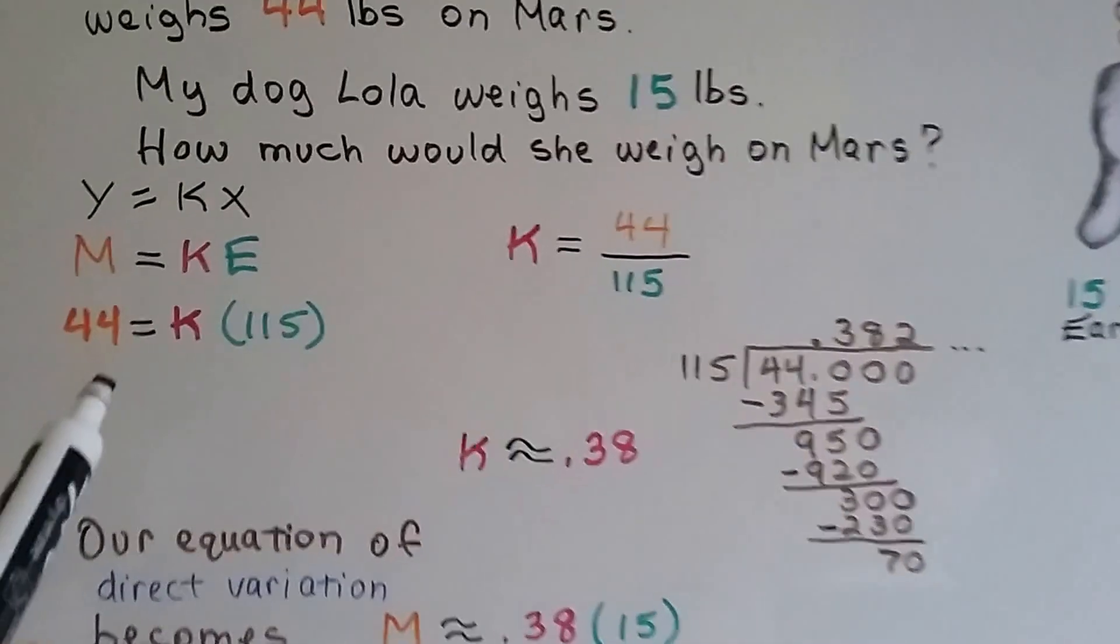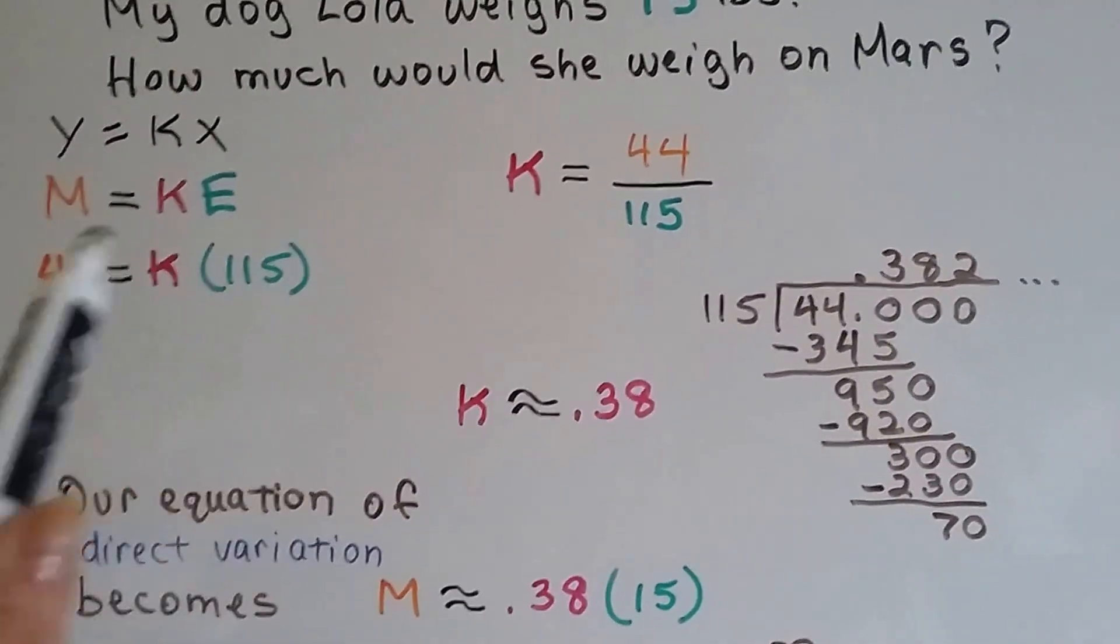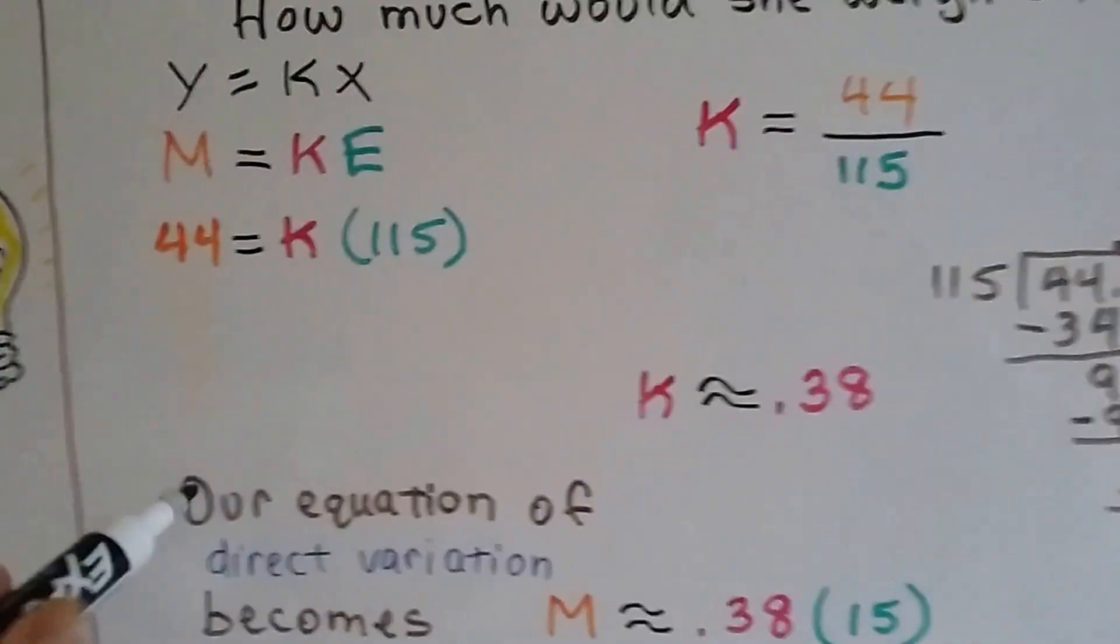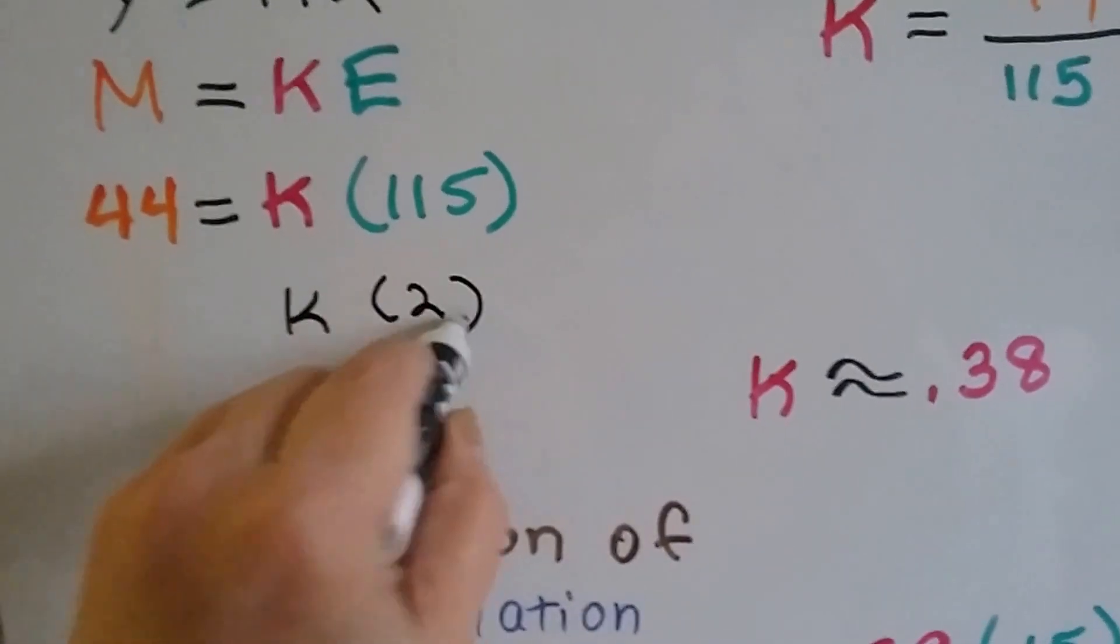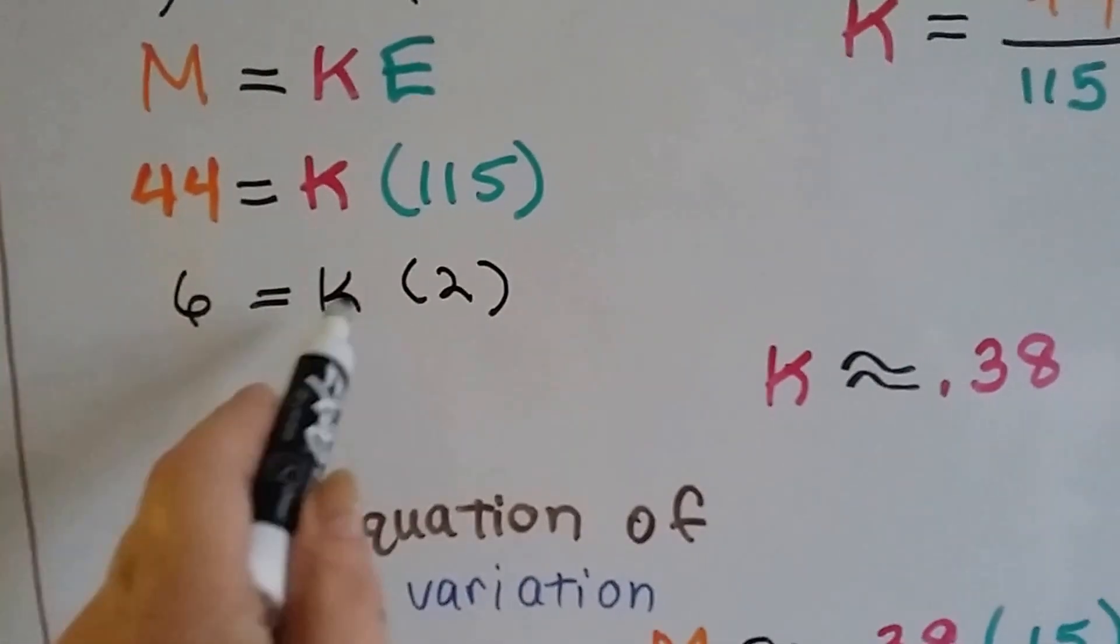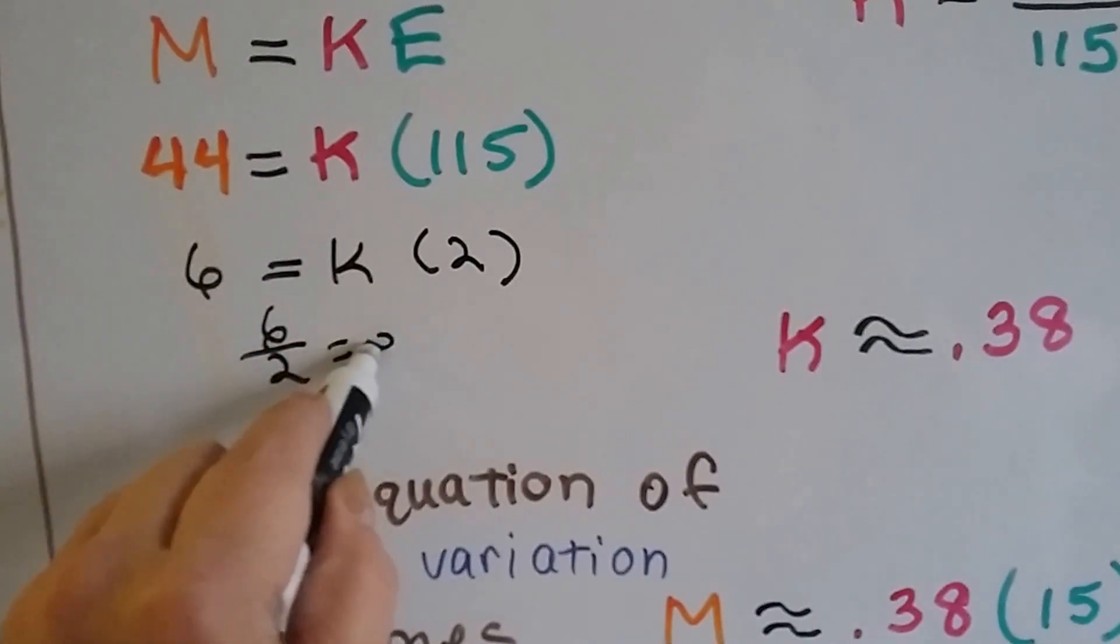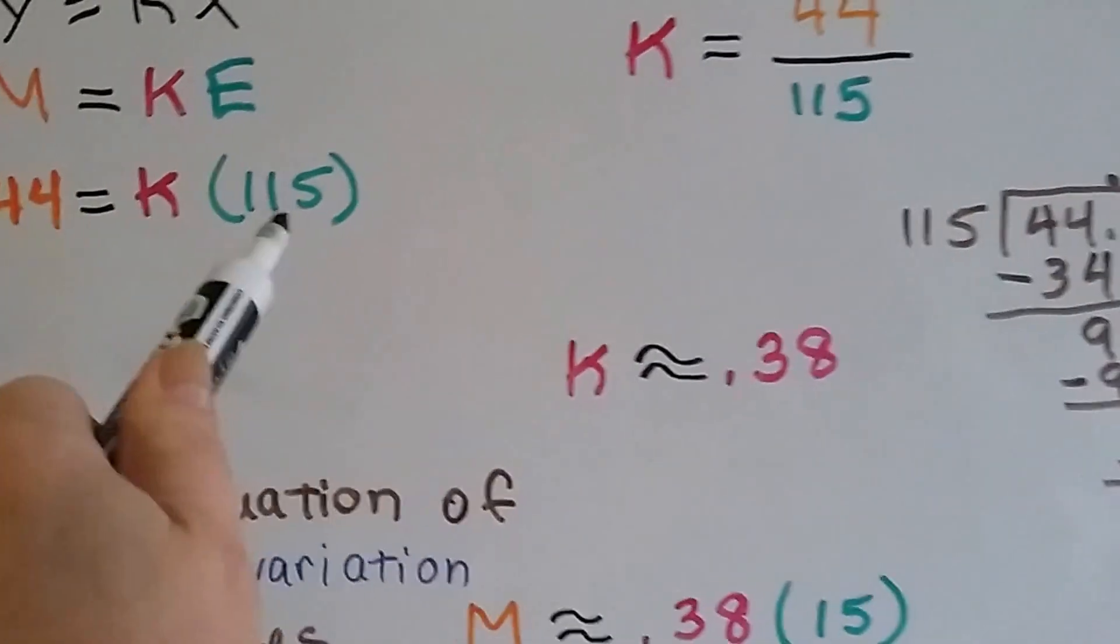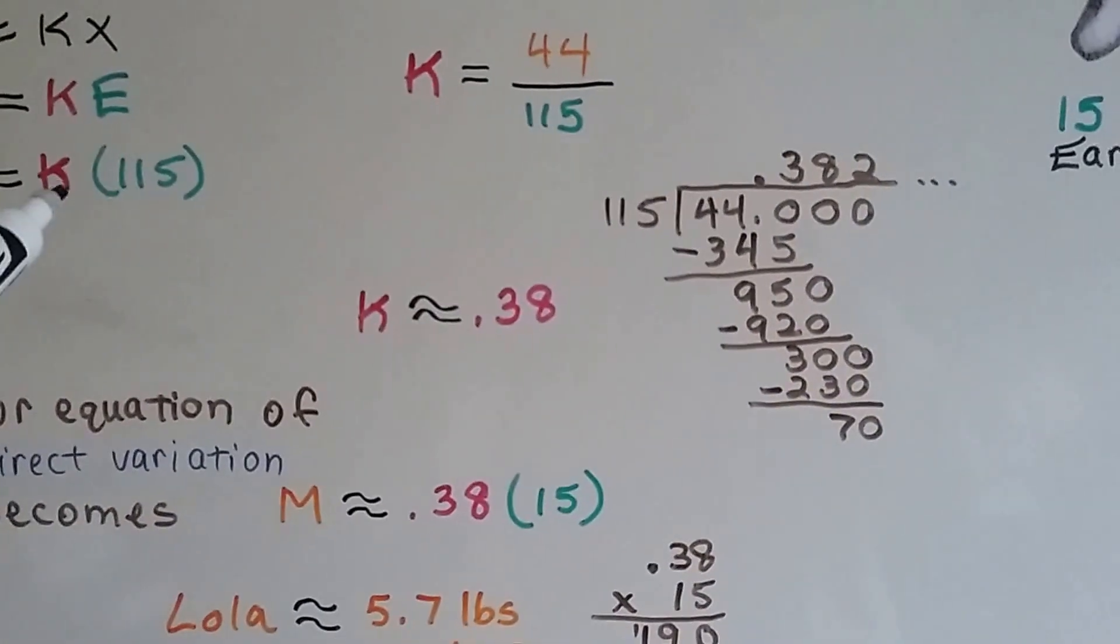To solve this, we can just put the 44 on top of the 115 to do division, because that's the opposite of multiplication. It's almost as if this said k times 2 equals 6. Well, what times 2 equals 6? We could just do 6 over 2 and get 3, couldn't we? So that's pretty much what we're doing here. We're putting this one on top of this one, doing the division, and finding out what the amount for k is.